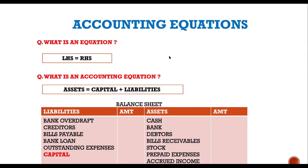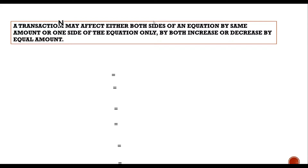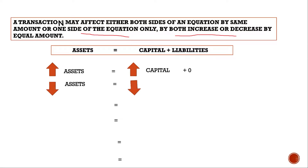Now we will do certain transactions for a better understanding of this concept. It is very important to understand that a transaction may affect either both sides — left-hand side as well as right-hand side of an equation — or only one side. On that one side, there will be both an increase and decrease by equal amount. The equation is: assets equal to capital plus liabilities. If assets are increasing, capital may be rising with no change in liabilities; or if assets are falling, there is a fall in capital while liabilities remain zero.